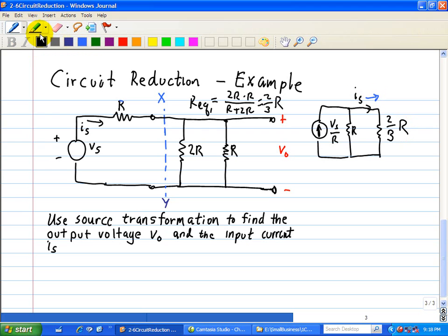And now we need to find the current IS. Well, we can use current division, which is the opposite resistor, which is R, and then the sum of those two, which is just two-thirds R plus R. And we have a current source of Vs divided by R.